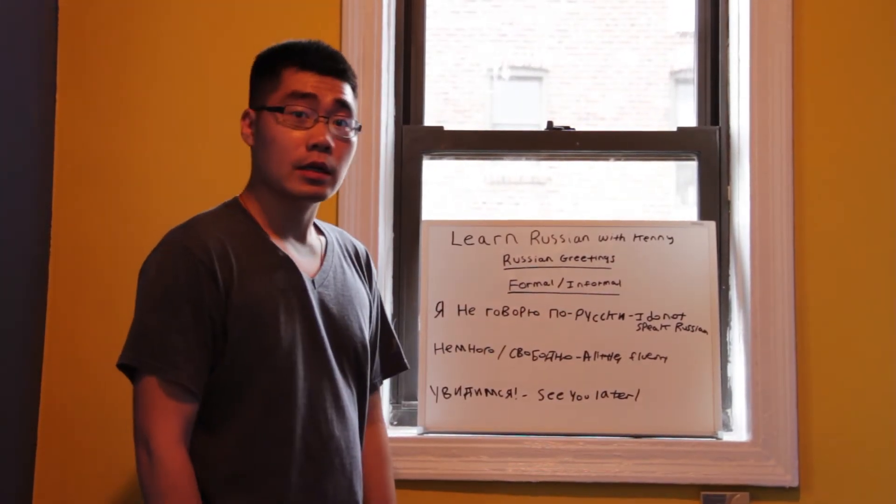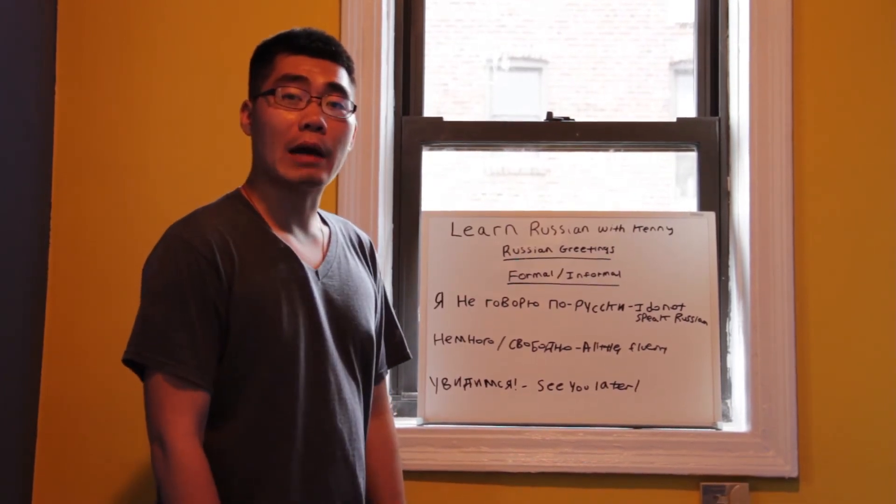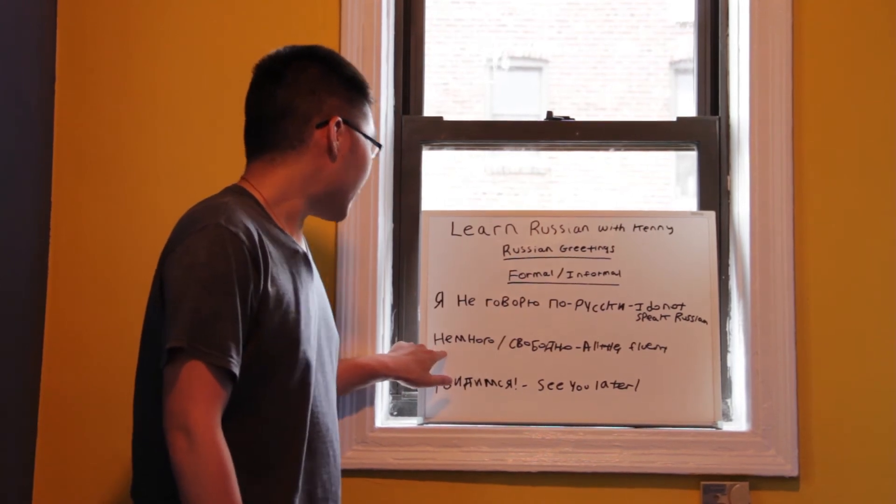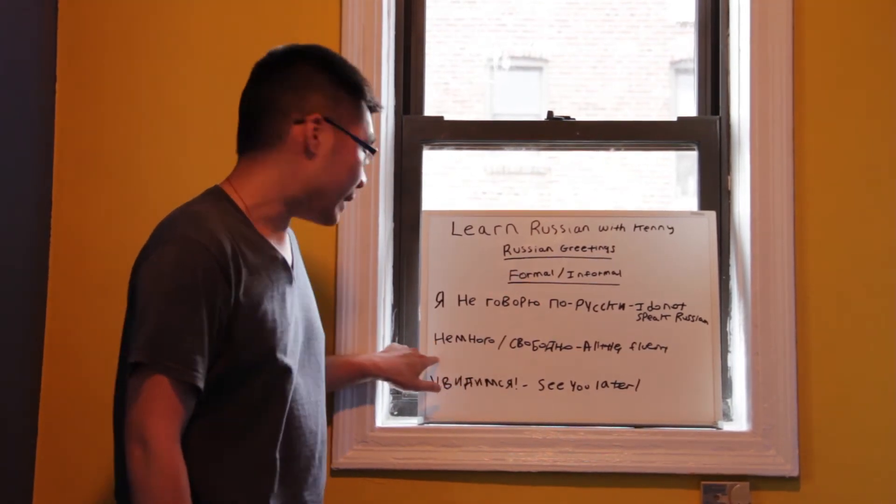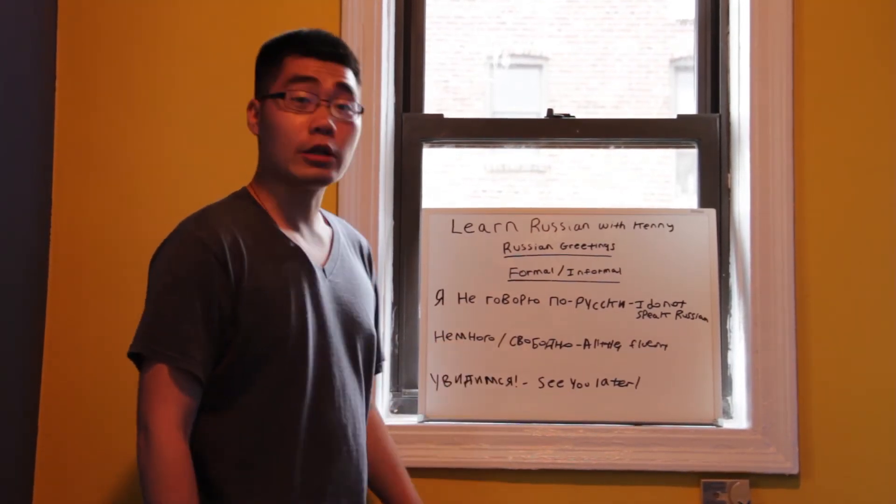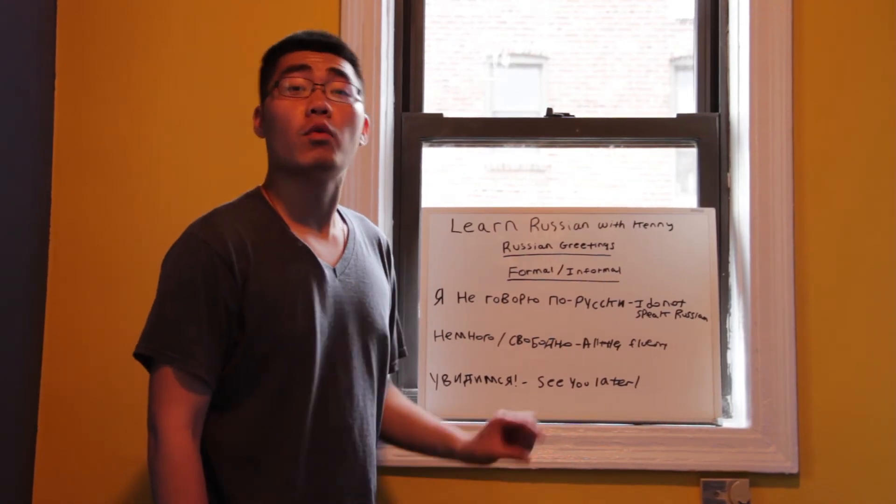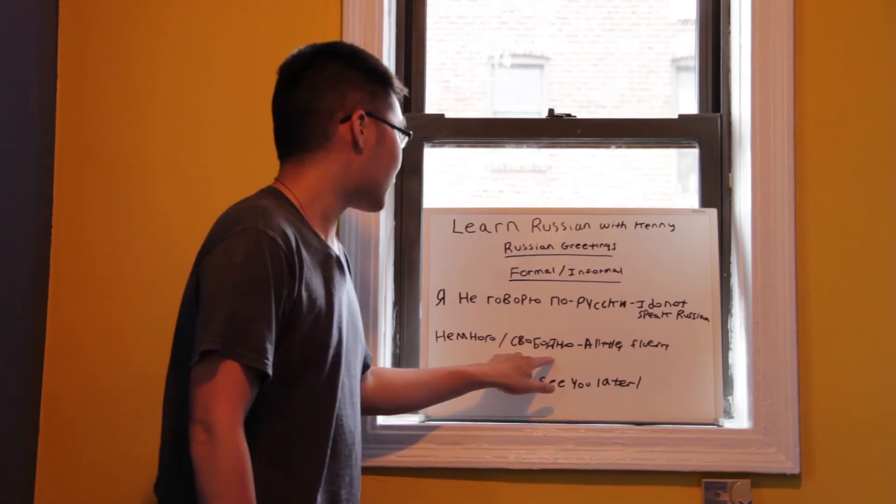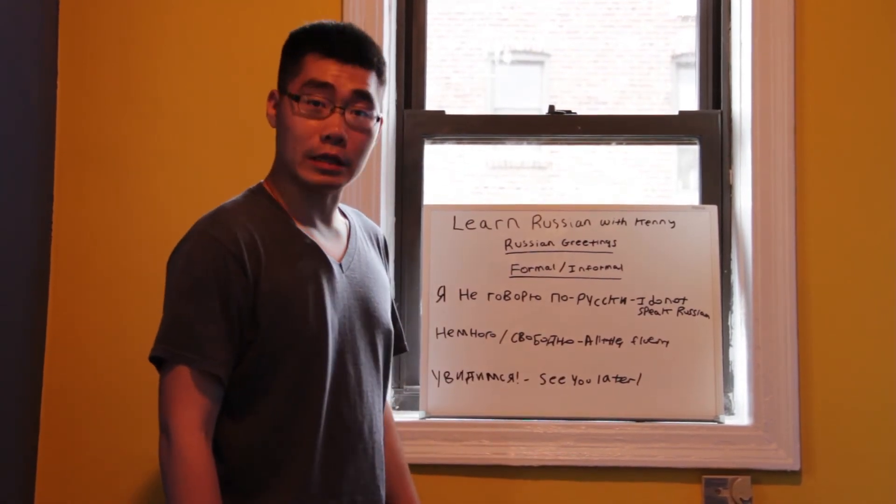Excellent. Here are supplemental words that I will include in this lesson. The word for a little, we say НЕМНОГА. НЕМНОГА. On the other hand, the word for fluent, as if you speak fluent Russian, is called СВАБОДНА. СВАБОДНА.